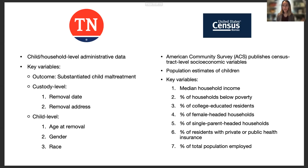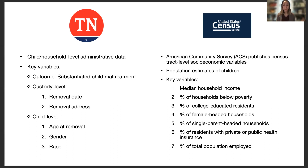There are also data sets through large government organizations like the United States Census Bureau that give us additional neighborhood level factors. We used the American Community Survey (ACS), which publishes census tract level socioeconomic variables every five years. The ACS provided our population estimates of children for rate denominators, as well as neighborhood level determinants such as median household income, percentage of households below poverty, percentages of college educated residents, and percentage of residents with insurance.